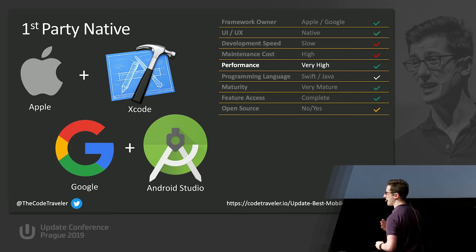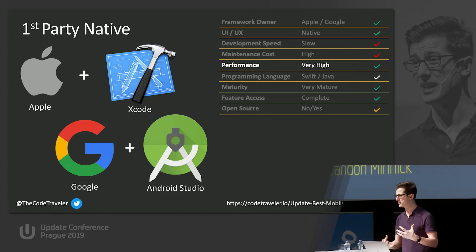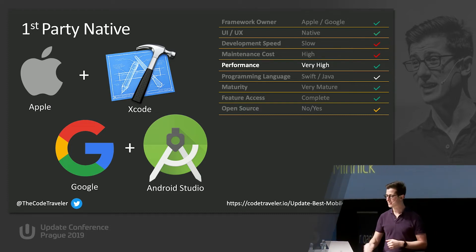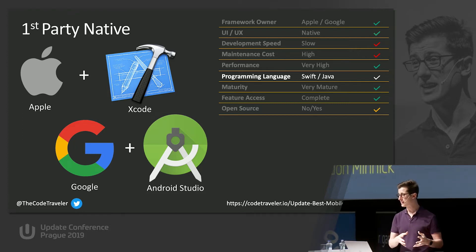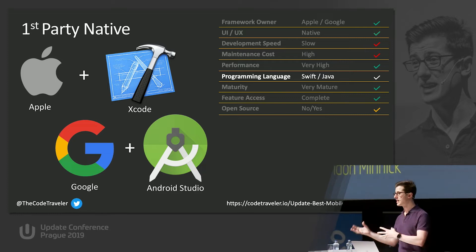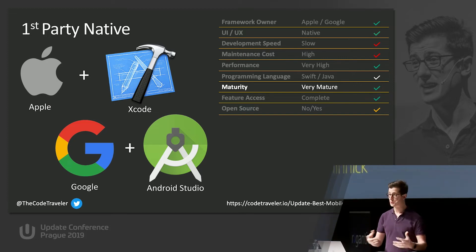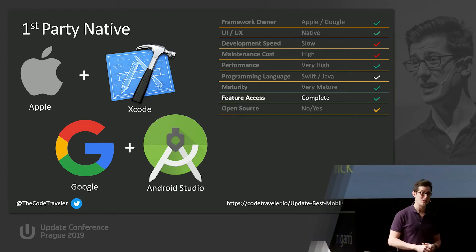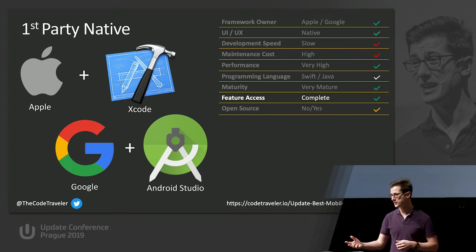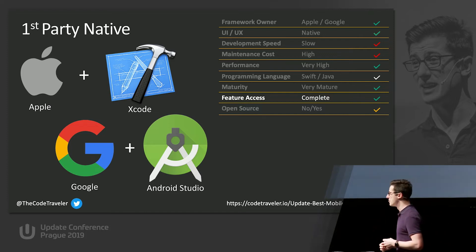If you have something that really needs high performance — maybe it's a game, or it's going to be doing real-time video analysis or machine learning — then maybe you want to take advantage of these first-party tools. The programming language for iOS is either Swift or Objective-C, with more folks choosing Swift nowadays. On Android, you can use either Java or Kotlin. The maturity is very high — these tools have been around ever since iOS and Android have been around. They're feature-complete, meaning you have access to all native APIs: AR, Bluetooth, geolocation, push notifications — every feature possible.